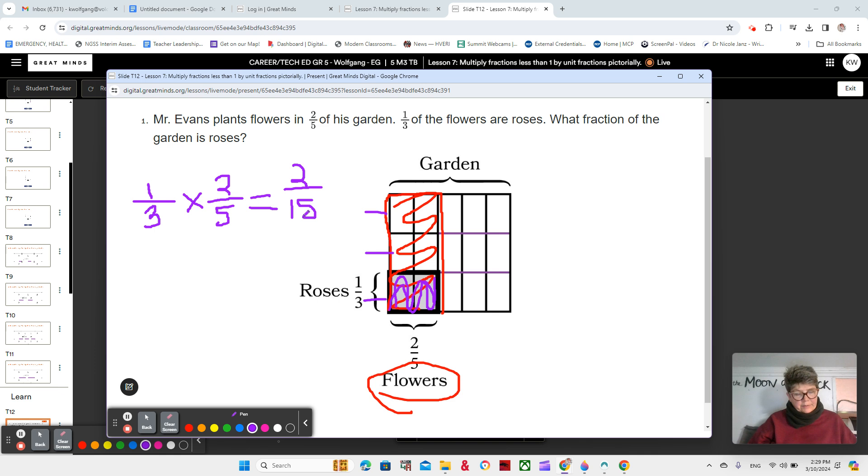What do you notice about the size of the product compared to the size of the factors? And how do you see that in the model? Okay? So, remember that your factors are your two numbers that are being multiplied together. And your product is your answer. So, let's think about the sizes of those. Right? We have two fifths. That's this whole section. And then we have one third. One third, that would be this section. One third of the flowers. So, that would be this section.